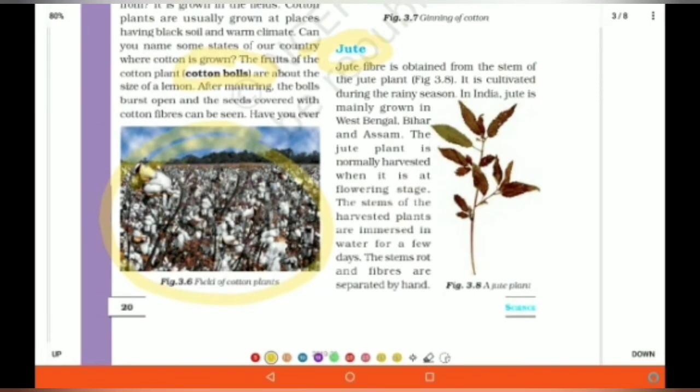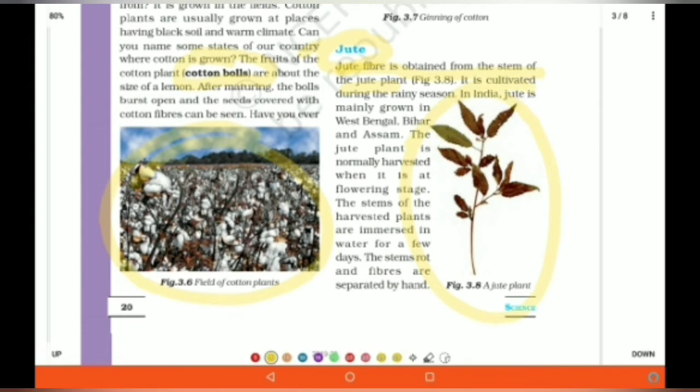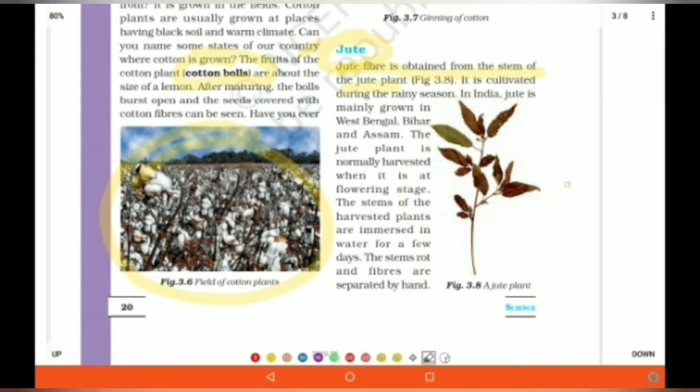The next natural fiber is jute. Jute fiber is obtained from the stem of the jute plant. This is how the jute plant looked like. Now, in India, jute is mainly grown in West Bengal, Bihar and Assam. It's normally harvested in the flowering stage. When the plant reaches the flowering stage, the jute is harvested.